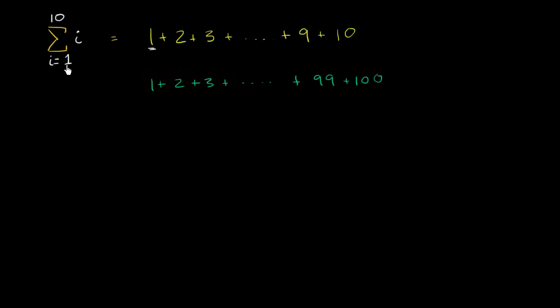And then you increment the index. And so i will then be equal to 2. i is 2. Put the 2 down. And you're summing each of these terms as you go. And you go all the way until i is equal to 10.